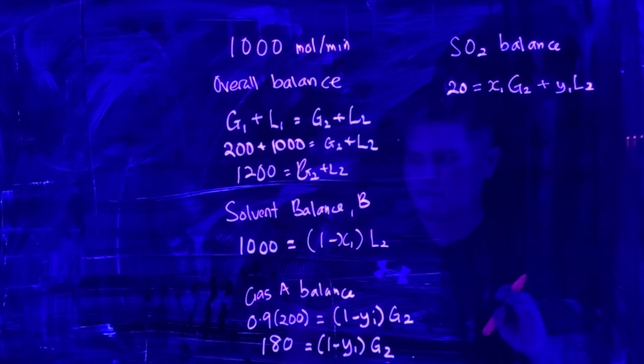How do we solve this particular equation? We know that the gas G2 is actually gas A and the remaining SO2.